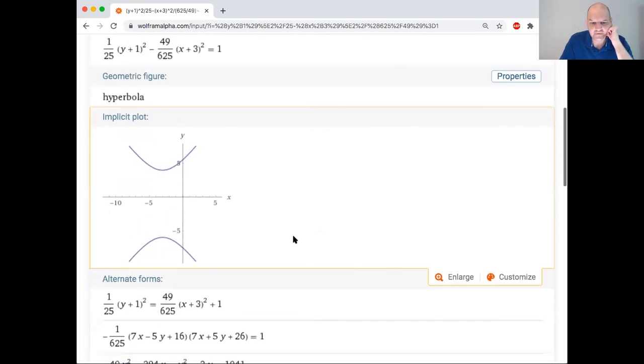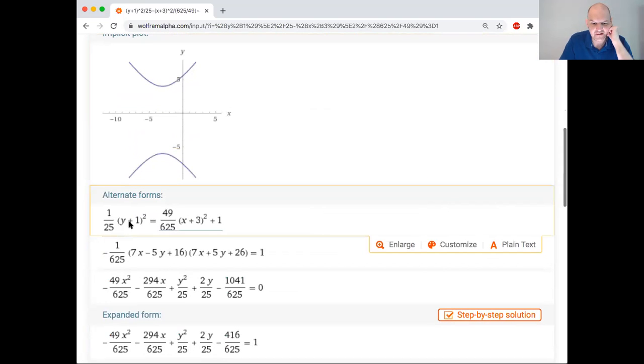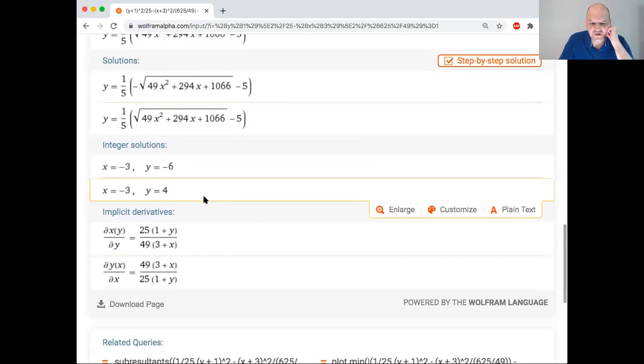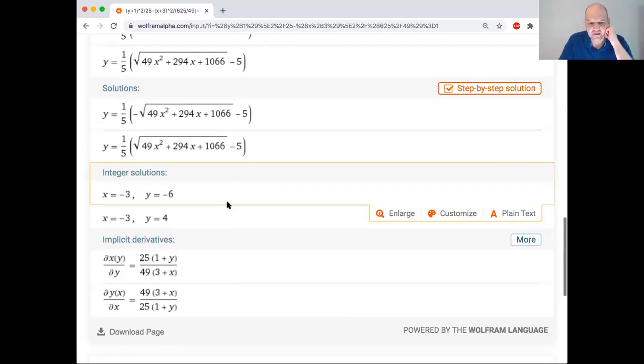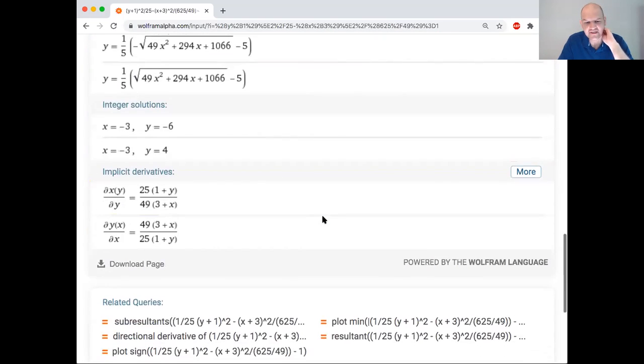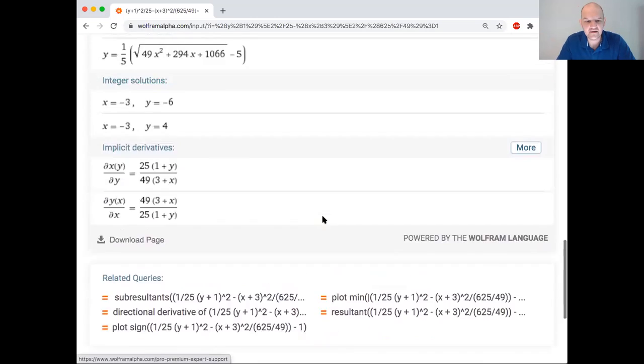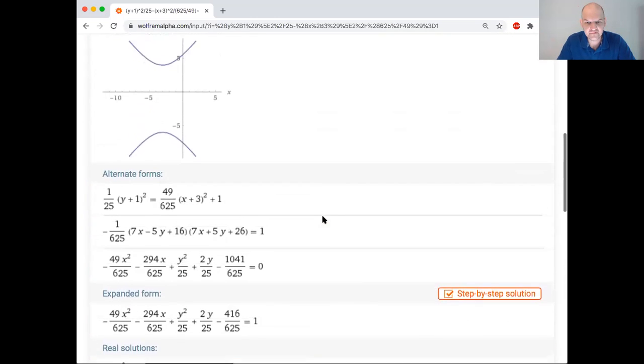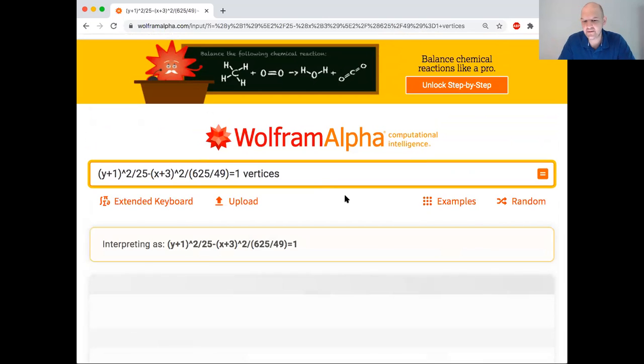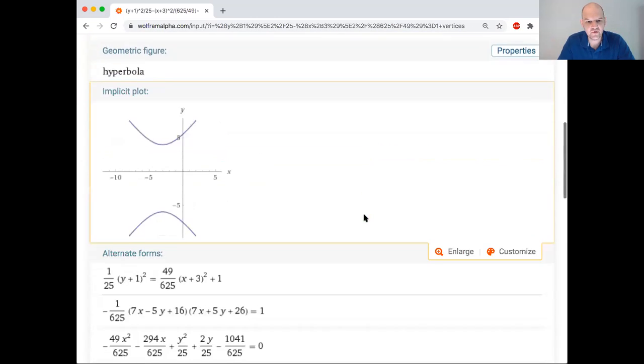So it tells you it's a hyperbola. It graphs it. It gives you alternate forms, integer solutions, which are actually really hard to find. And then, does it not tell you anymore? It used to tell you things about it.